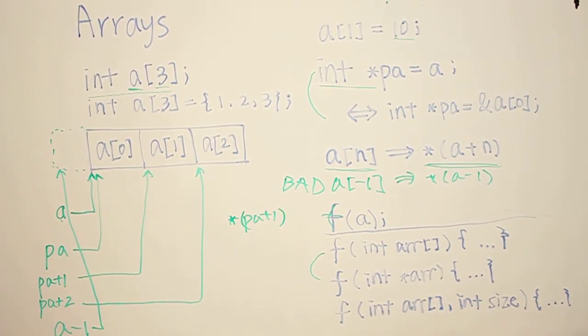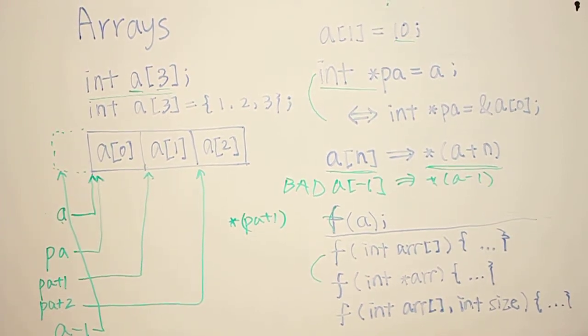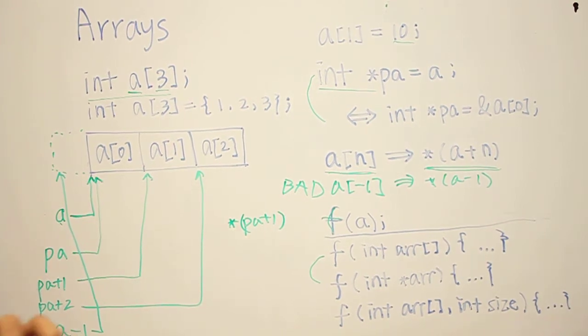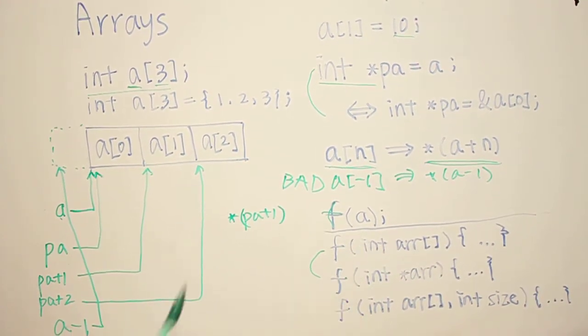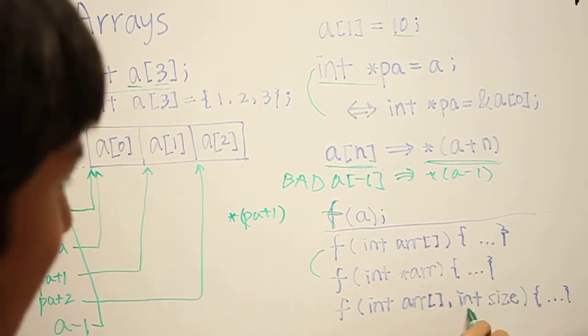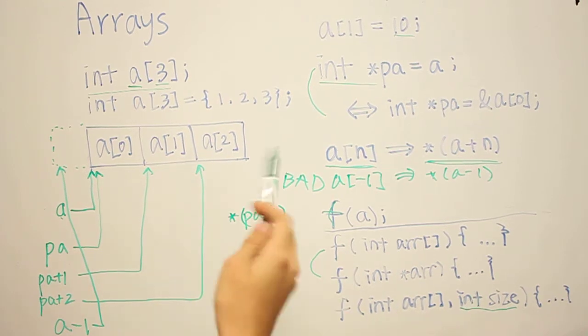One thing about this that you need to notice is that when we're passing in an array, we're not actually passing in all the elements in the array. We're just passing in the address of the first element. So in the method, we don't really know how many elements are in the array. So we probably want to pass in the size of the array too, like this, so that you don't get out of bounds.